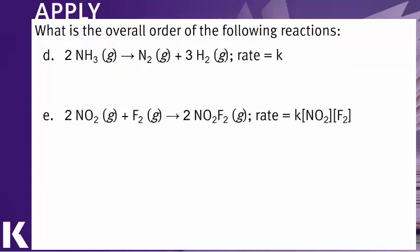Let's take a look at D. This is another great example. Notice we just have rate equals K. There's nothing here that tells us about the concentration of reactants. This means that the rate here is independent of the concentration of ammonia. So this would be like putting NH3 to the 0 power because any number raised to the 0 power is 1. So this would have an overall order of 0.